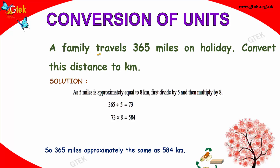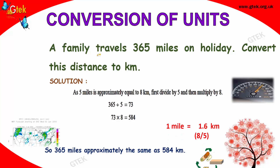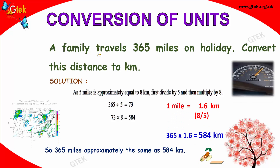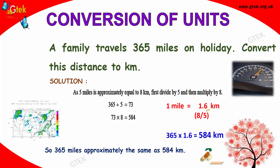Now, your family travels 365 miles on holiday. I want to convert the distance to kilometers. So miles need to be converted into kilometers. By simple terms, 1 mile is equal to 1.6 kilometers. So 365 miles into 1.6, you get 584 kilometers.